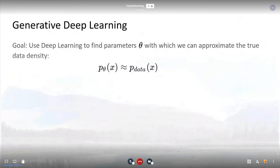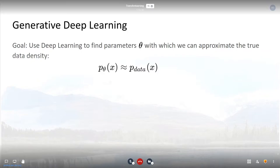Whenever we want to generate or synthesize images with neural networks, we're talking about a field of machine learning called generative deep learning or generative modeling. The goal of generative modeling is to approximate or learn the generating distribution of some data — for example images, audio, or text. We do this by observing samples from a given subset of this distribution, which is our dataset. After training such a model, we would like to be able to sample from the learned distribution — for example, if we have a dataset of images of dogs, we would expect to synthesize a new image of a dog that is not in the training data but still looks like a dog.